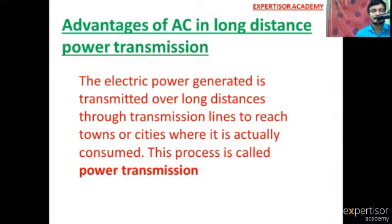This process is called power transmission. Due to alternating source in long distance, the power loss is very less. It is easy to transmit and also it gives a higher amount of energy. These are the advantages.